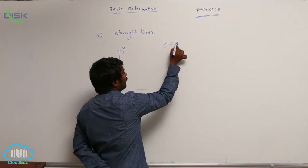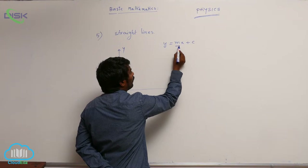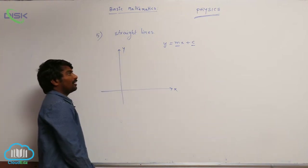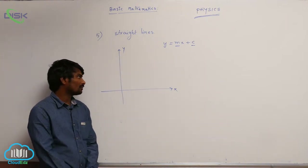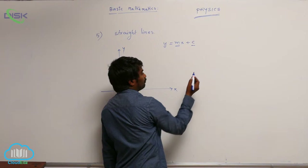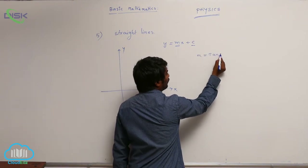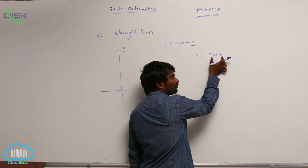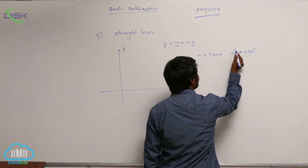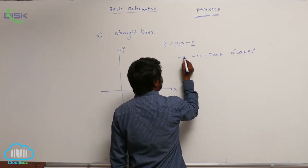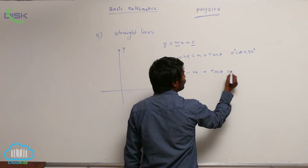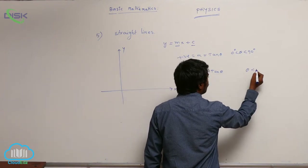y is equal to mx plus c. m is positive so it is having positive slope, c is positive so it is having positive intercept. m is positive means tan theta must also be positive. tan theta positive means theta must be less than 90 degrees. m is negative means tan theta also negative, but tan theta is negative in the second quadrant.